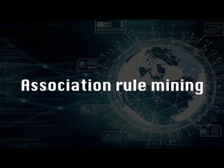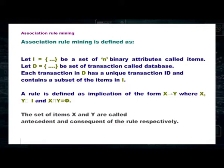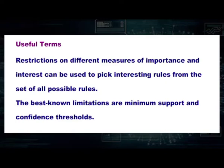In association rule mining, consider a set I containing n binary attributes called items, and let D be the set of transactions stored in the database. Each transaction in D has a unique transaction ID and contains a set of items from I. A rule is defined as an implication of the form X → Y, where X and Y are contained in I and X intersection Y is a null set. The set X is called the antecedent and Y is called the consequent. The best-known restrictions on rule importance are minimum support and confidence threshold.